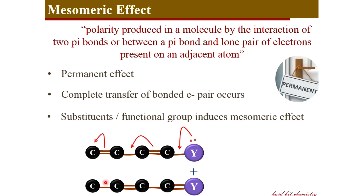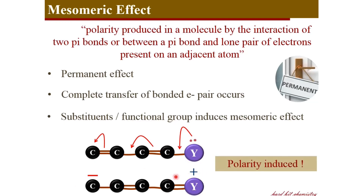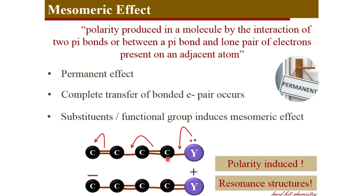This carbon becomes negatively charged. There occurs a complete transfer of bonded electron pairs due to the presence of this particular substituent or functional group, causing polarity in the molecule. The molecule before was non-polar, but now positive and negative centers are created within the molecule because of the movement of electrons due to the presence of pi bonds in conjugation or the lone pair in conjugation with the pi bond. These two structures are called resonance structures of this particular molecule and the actual structure lies in between the two resonance structures.